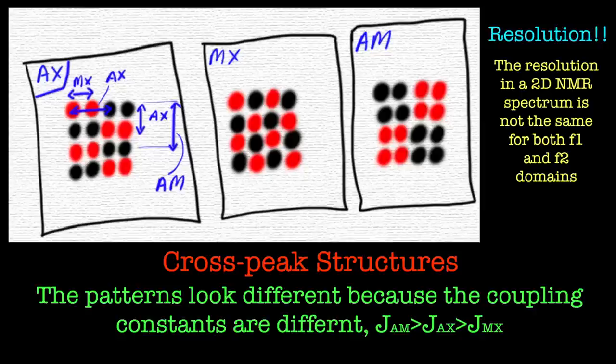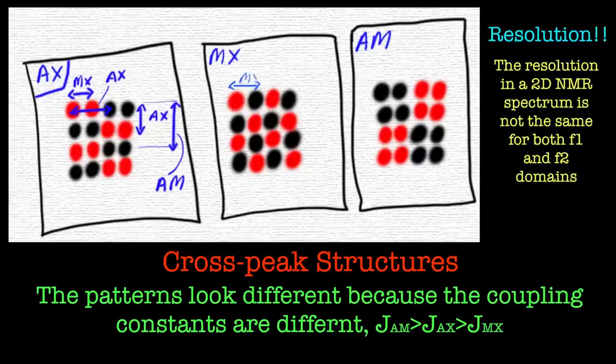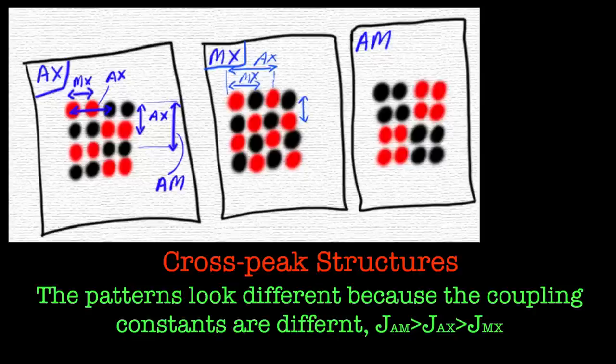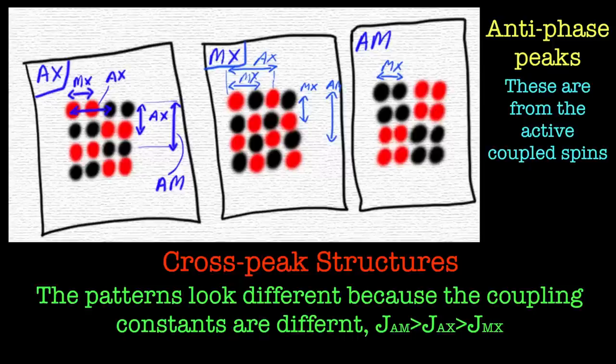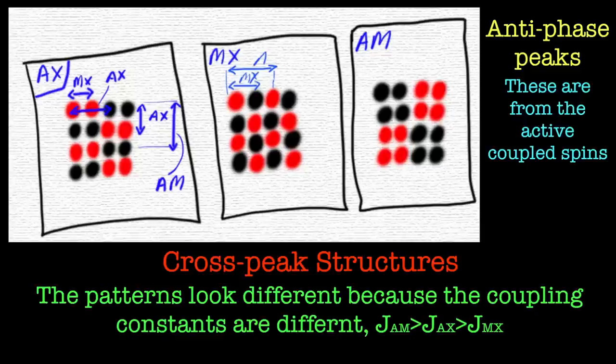So always go for the highest resolution one, which is usually the F2 domain. And of course, the exact same principles can be applied to the MX and the AM spin systems, or any spin system that you're actually interested in in the real world. So you're looking at this anti-phase relationship, and that will tell you the active spin coupling.